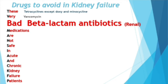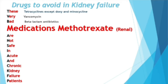'B' is for beta-lactam antibiotics, which again are antibiotics that lead to renal injury. 'M' stands for methotrexate, which can also lead to renal injury, and we need to avoid it in acute and chronic kidney failure patients.